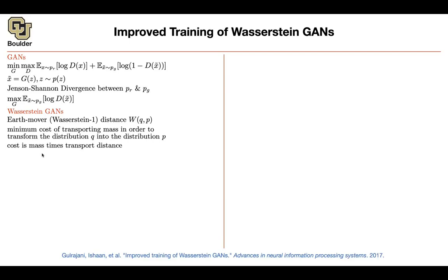Mathematically, let's use the same notation. Previously we were using F; let's use D to see the similarity between the two objectives. This was a discriminator — now you're going to call it a critic, because it's not going to give you probabilities as output. You can see that you are getting rid of the log in this new objective. You can rename log of D to be your new D, the plus changes to a minus, and you get rid of the log. So these two objective functions are very similar — you are getting rid of the sigmoid and the log in your Wasserstein GAN.